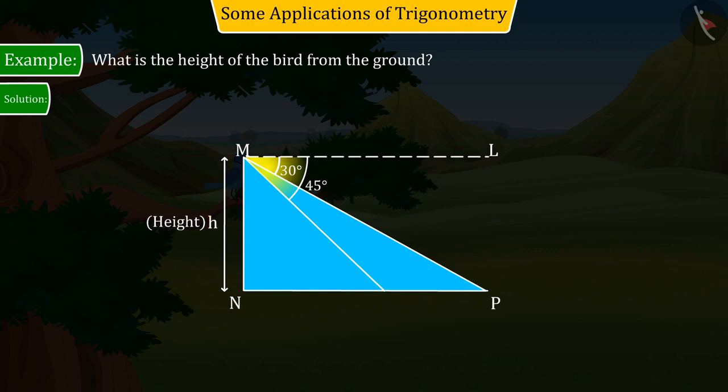Let's represent the first position where the rat is seated by point P. In that case, the angle of depression made by the line of sight and the horizontal line of the bird sitting on the branch is 30 degrees. Looking at the figure, we find that PM is a transversal line of parallel lines LM and PN. Therefore, we can say that angle LMP and angle MPN are alternate angles.